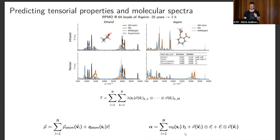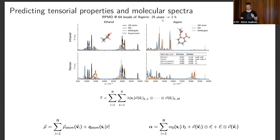Having learned these properties, we can run molecular dynamics simulations. For example, a ring polymer molecular dynamics simulation with 64 beads for aspirin — which would have taken 25 years with DFT — we can do in one hour. Since we have the dipole moment and polarizability tensor, we can calculate infrared and Raman spectra.